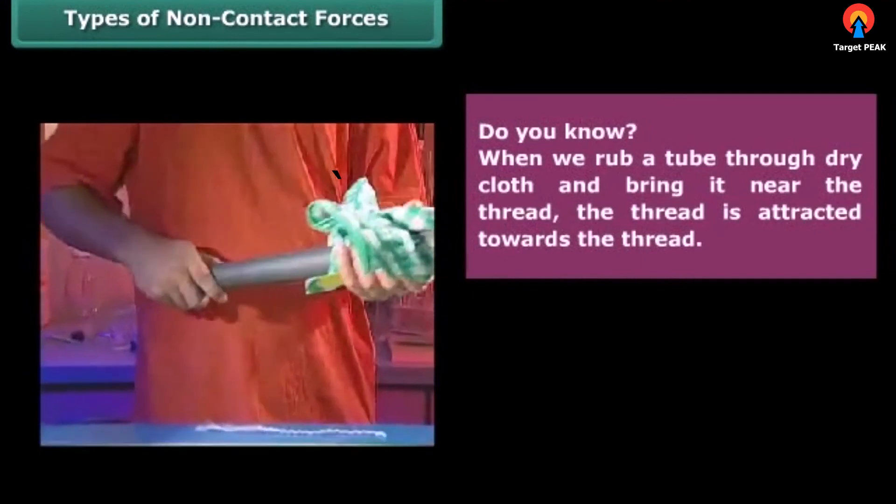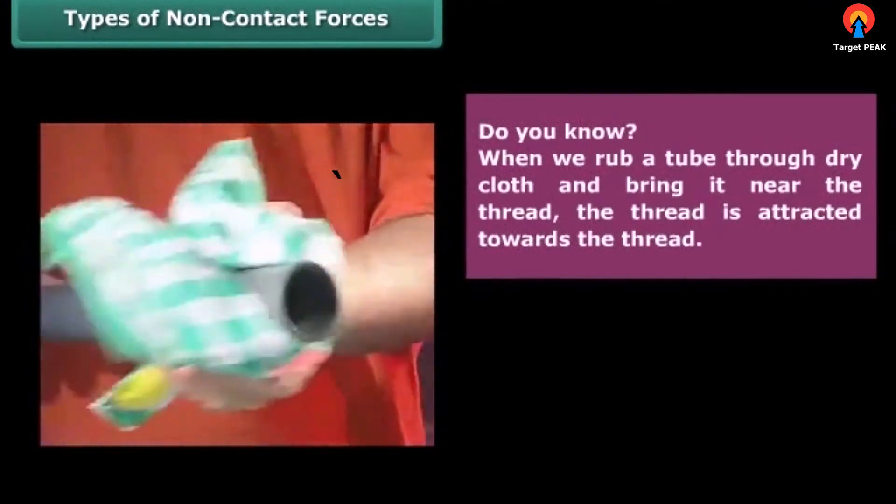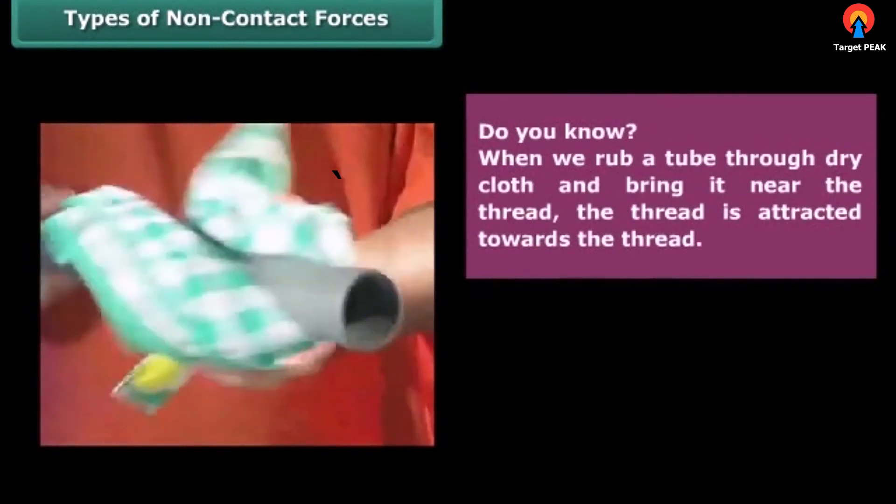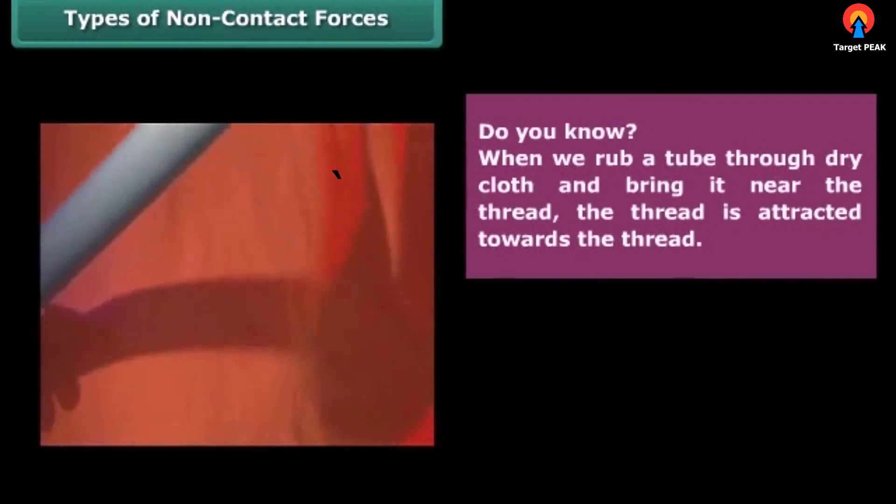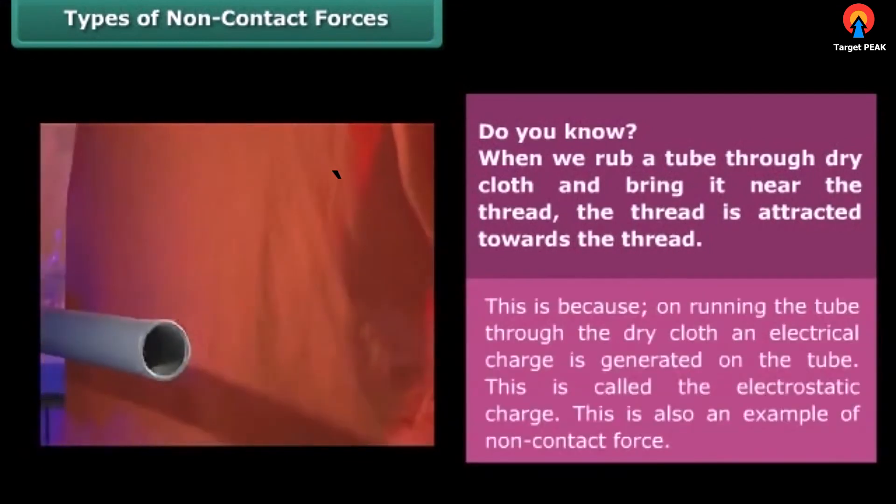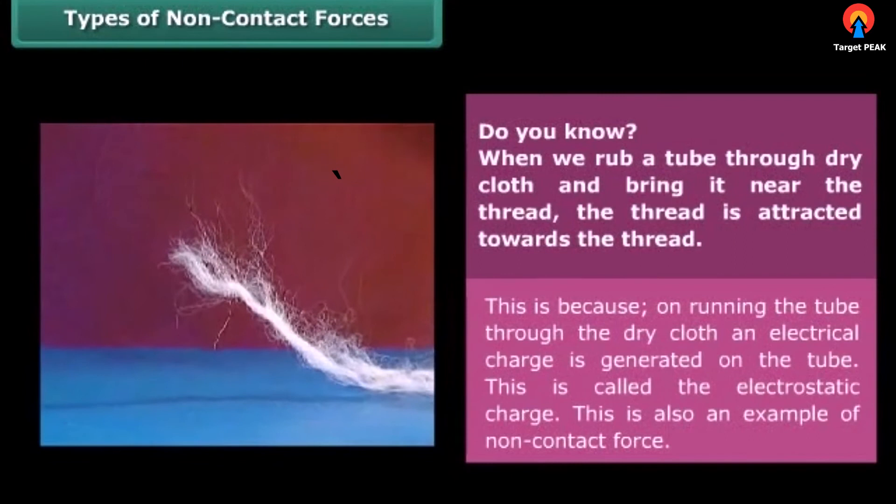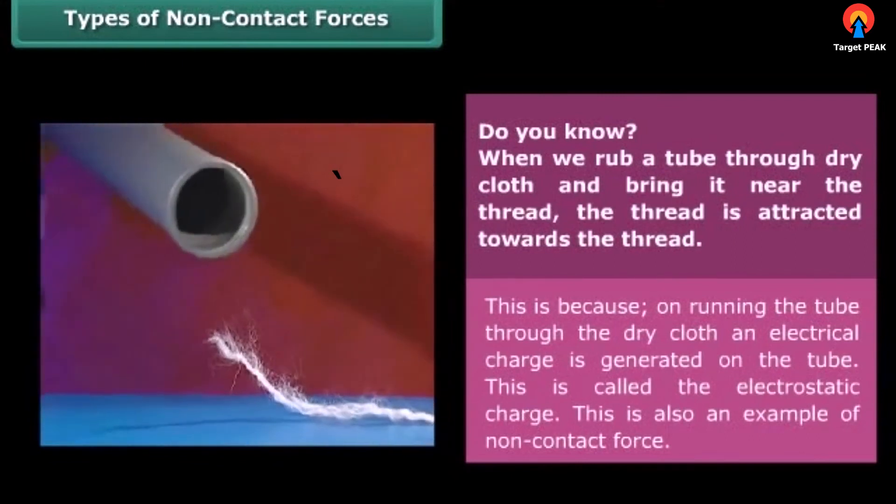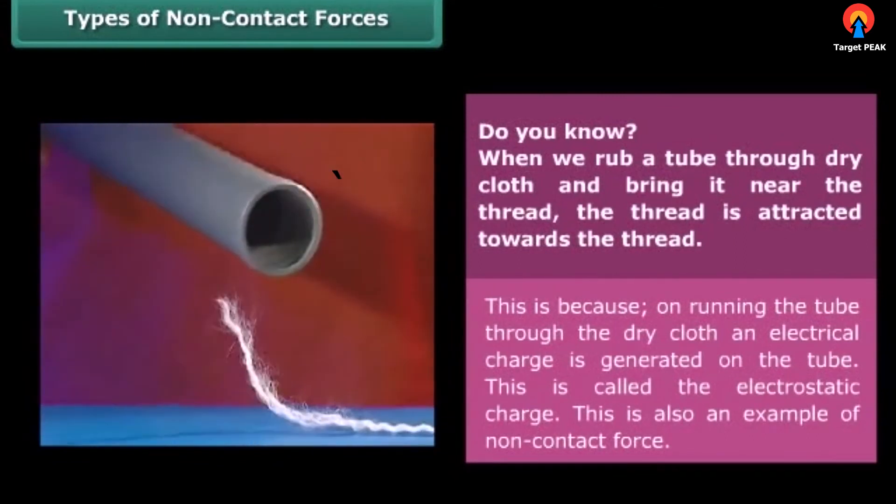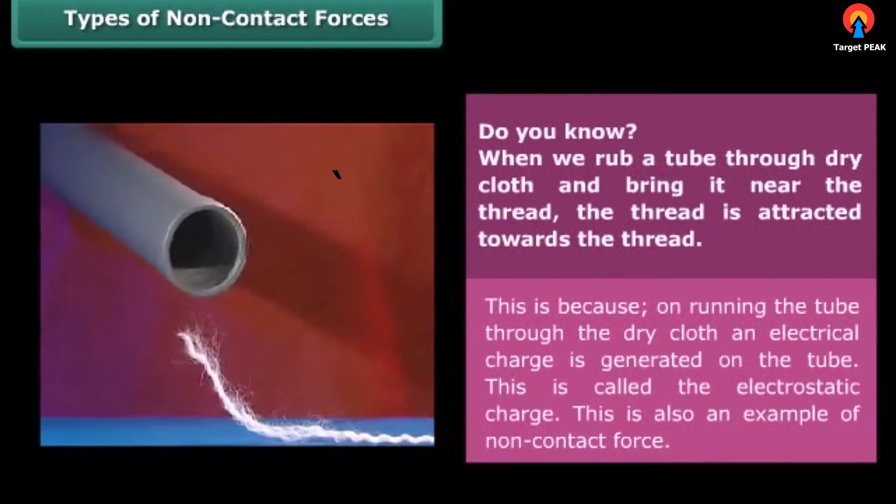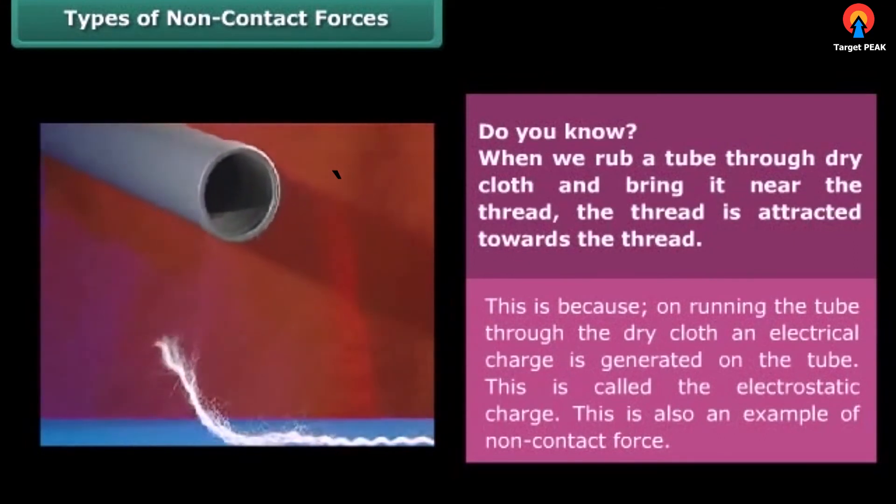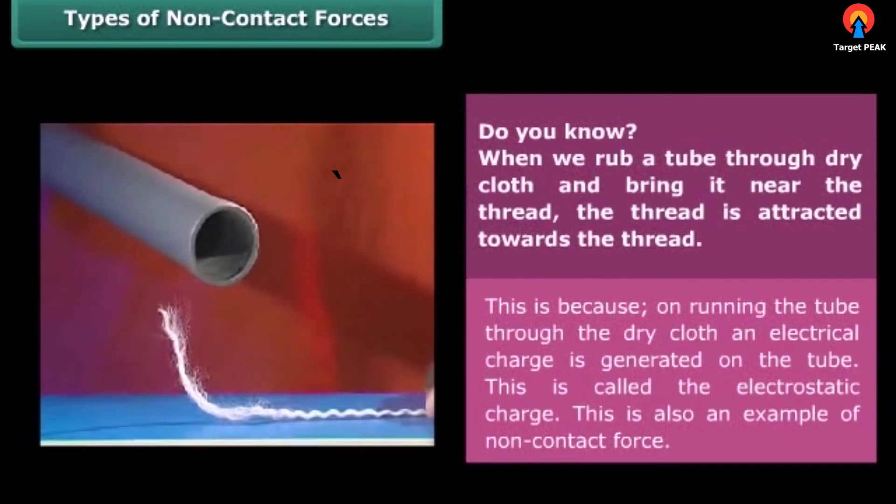When we rub a tube through dry cloth and bring it near the thread, the thread is attracted towards the tube. This is because on rubbing the tube through the dry cloth, an electrical charge is generated on the tube. This is called the electrostatic charge. This is also an example of non-contact force.